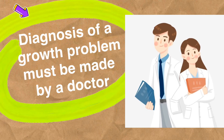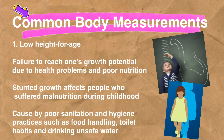Always remember that the diagnosis of a growth problem must be made by a doctor. Common body measurements: Number one, low height for age — failure to reach one's growth potential due to health problems and poor nutrition. Stunted growth affects people who suffered malnutrition during childhood, caused by poor sanitation and hygiene practices such as food handling, toilet habits, and drinking unsafe water.